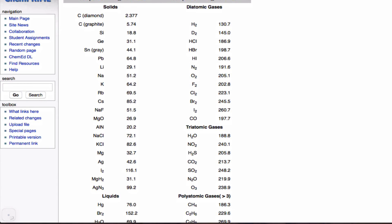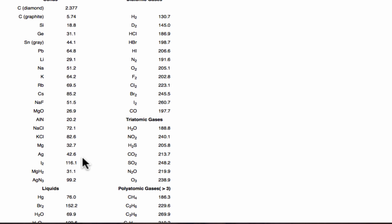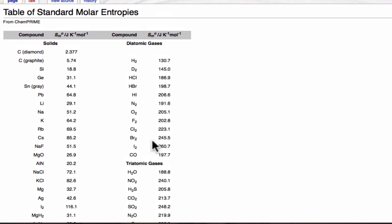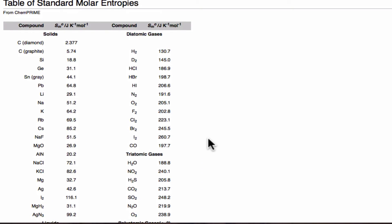Let's compare solids, liquids, and gases for similar substances. A nice example is provided by the halogens: solid I2 has an entropy of about 116.1 J/K/mol. When we move to liquid bromine, we get a much larger entropy, 152.2 J/K/mol. And then gaseous fluorine is up to 202.8 J/K/mol. So from solid to liquid to gas, entropy increases. Notice also that within the diatomic gases, as we move down group 17 from fluorine to chlorine to bromine to iodine, we get higher and higher entropies — 202, 223, 245, 260 — entropy increasing with molecular mass.